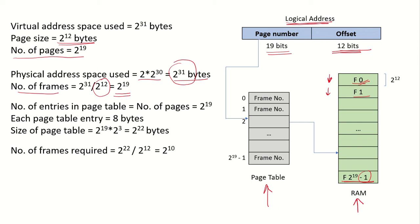Each frame is 4KB which is 2^12 bytes. Using the page number we map into the corresponding page table entry, get the frame number from there, and then use the frame number along with the offset to map to the exact address in physical memory.